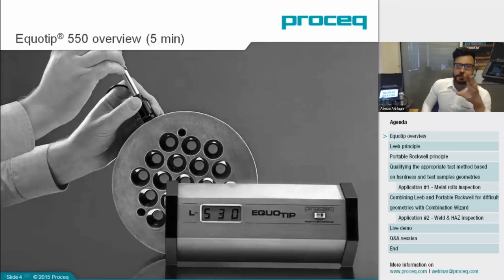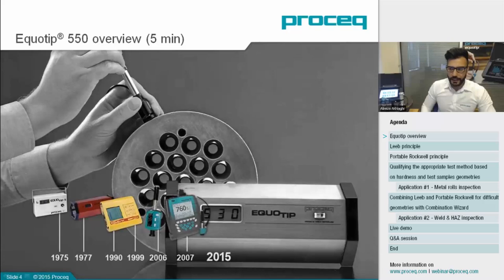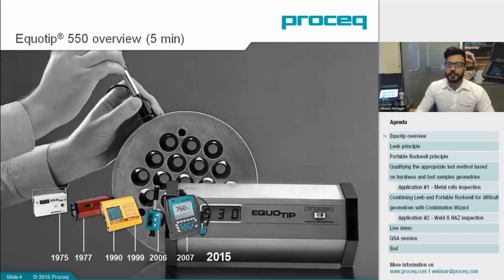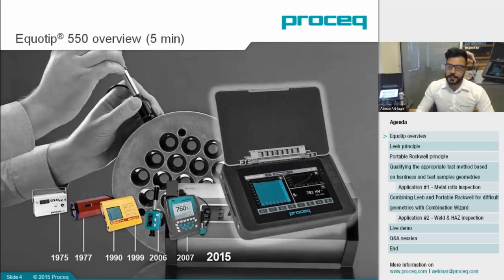First, I'd like to give you some background and overview about our latest platform, ECOTIP 550. I've got it right here with me, along with some test plugs and a view of our impact devices and indenters. As many of you may be aware, we started with the ECOTIP platform in 1975, and over the years we have introduced new devices, each with additional advantages and features. In 2015, we were very pleased to announce the release of our latest platform, ECOTIP 550.